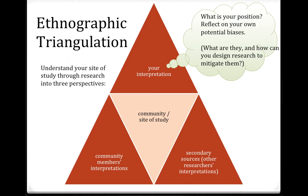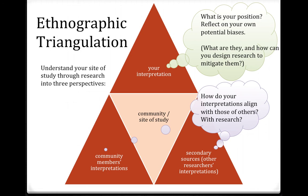Forming your interpretation also requires reflective work — what is your position, and what are your potential biases? You should not only present what you're seeing, but also throughout be reflecting: what biases am I bringing in, and how can I design research to mitigate ways those biases might over-color what I'm looking at? With community members' interpretations and secondary resources, you're thinking about how your interpretations might align with these or differ. These are the three perspectives we're always trying to look at when forming conclusions.